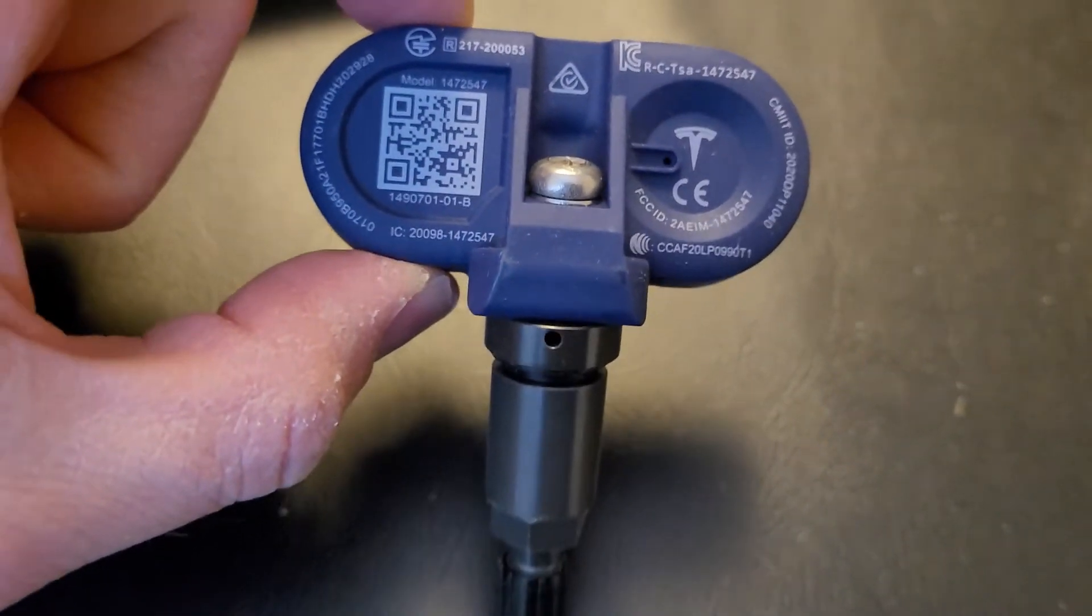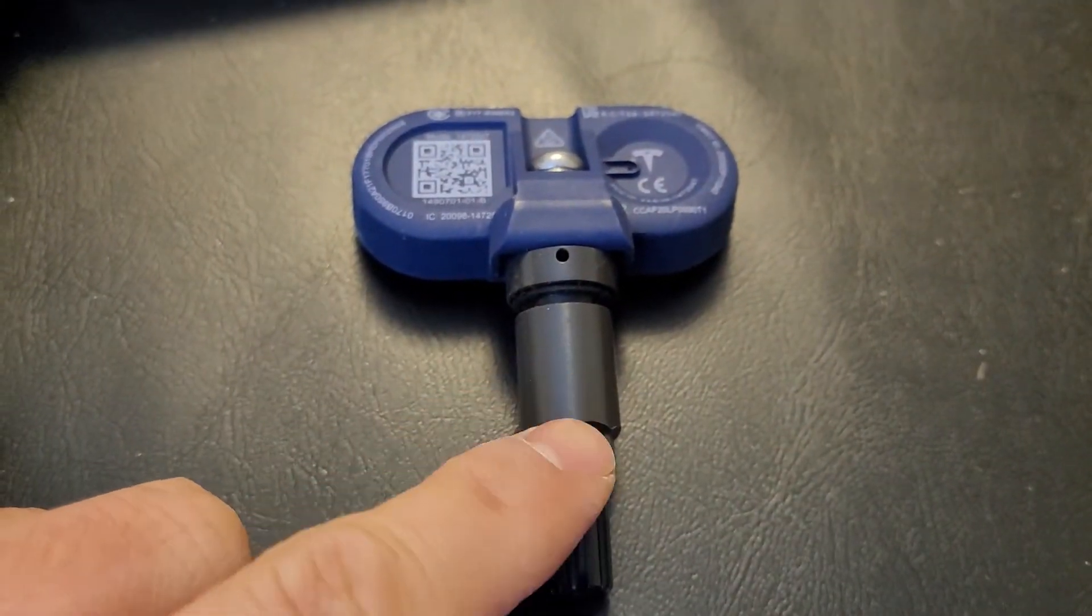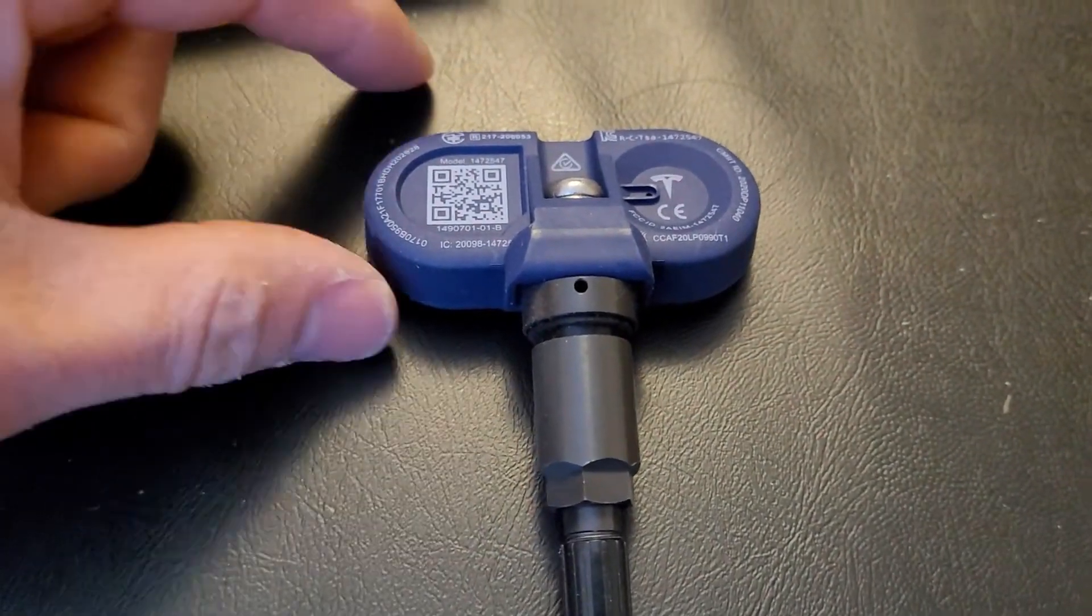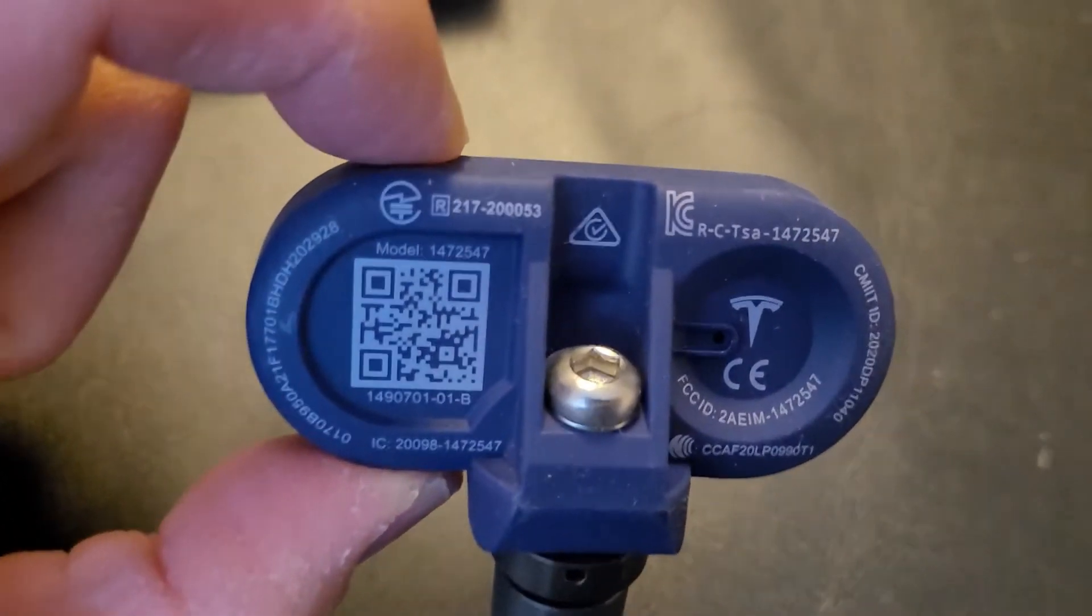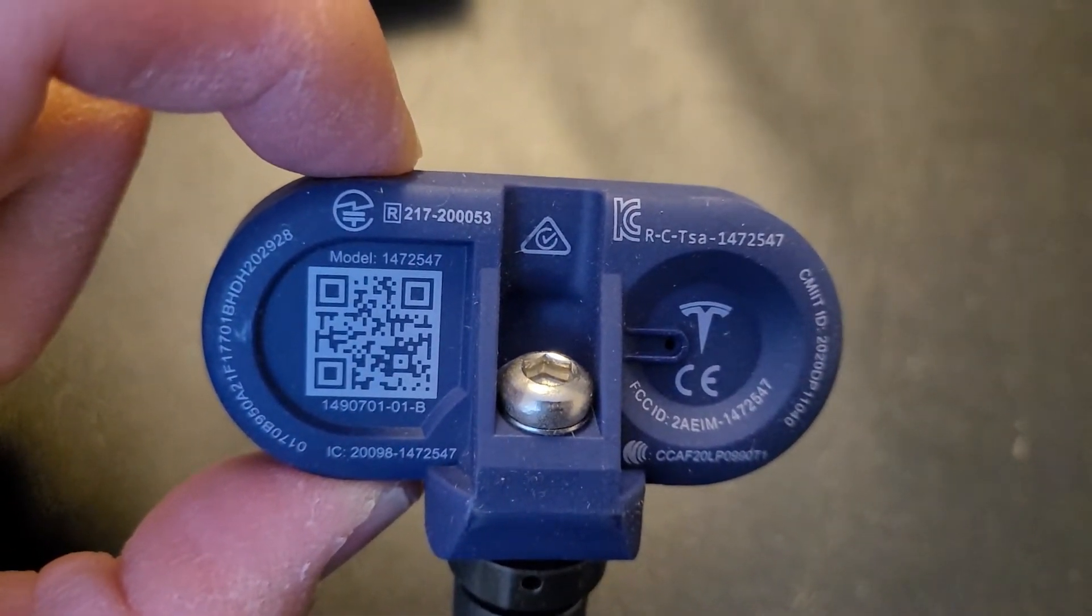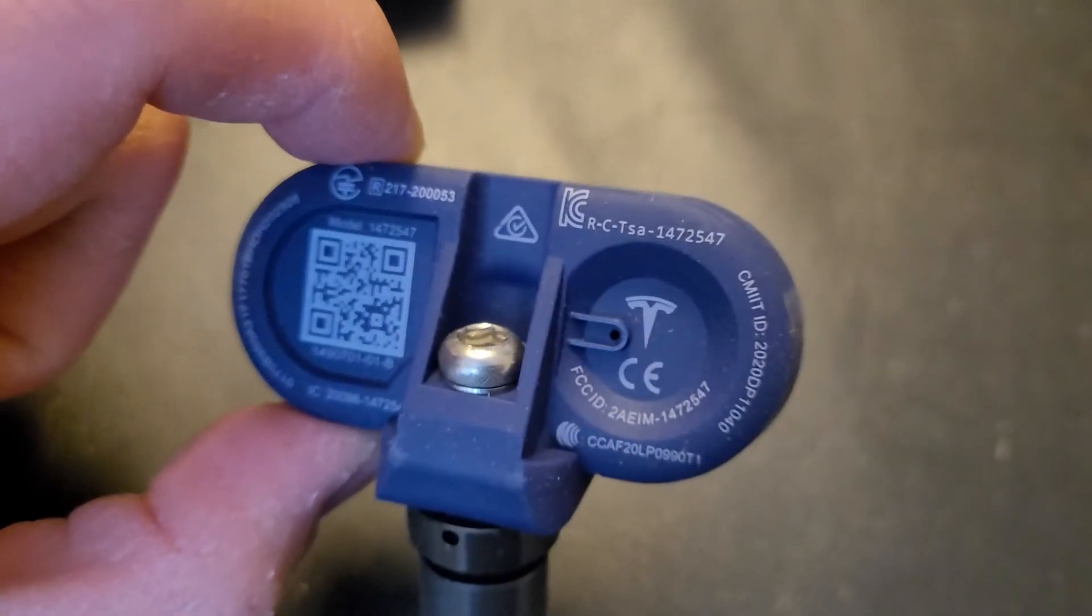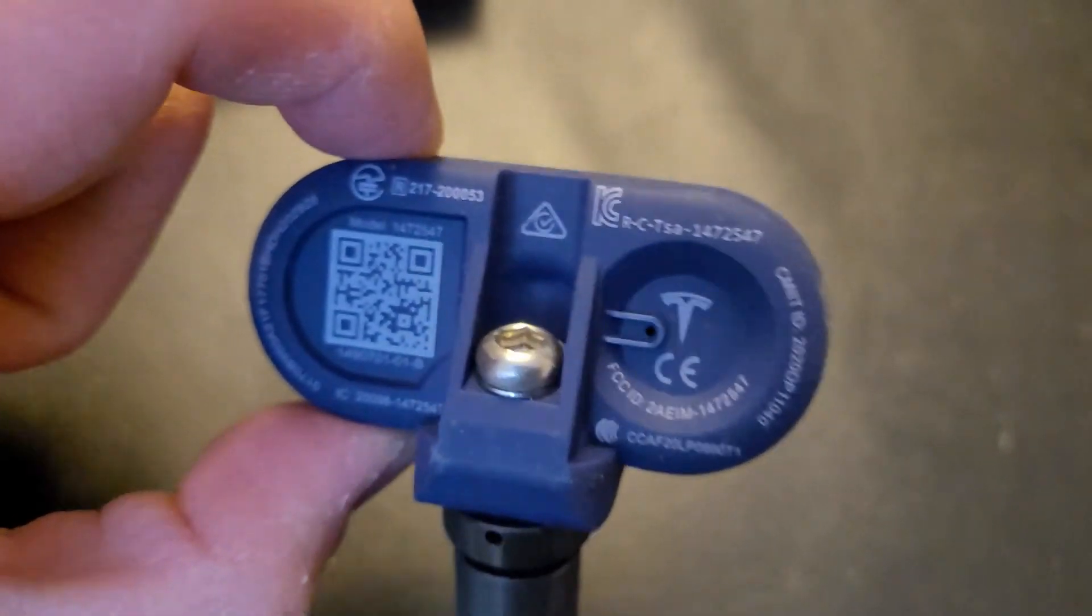I think you can choose two colors. This stem here you could choose either black or silver. So here's what it looks like on the inside of the TPMS.